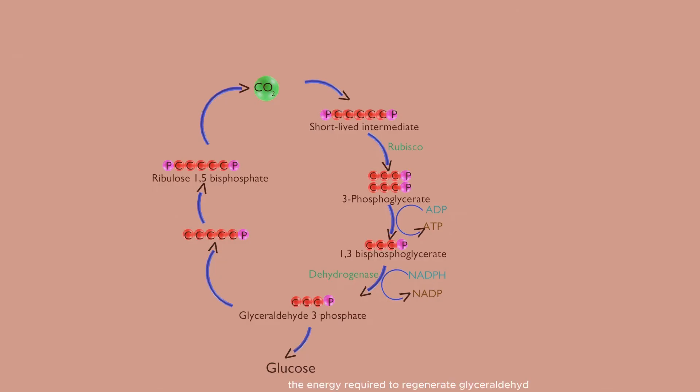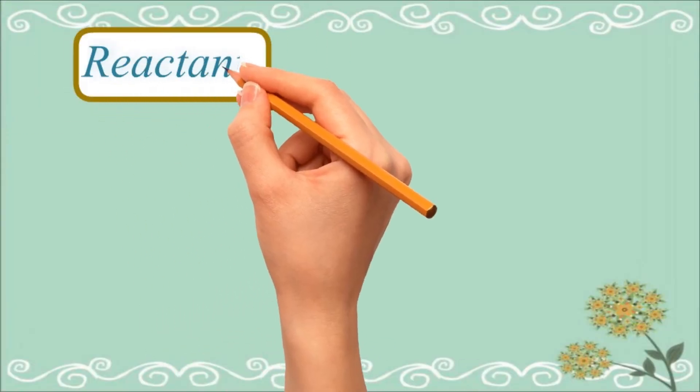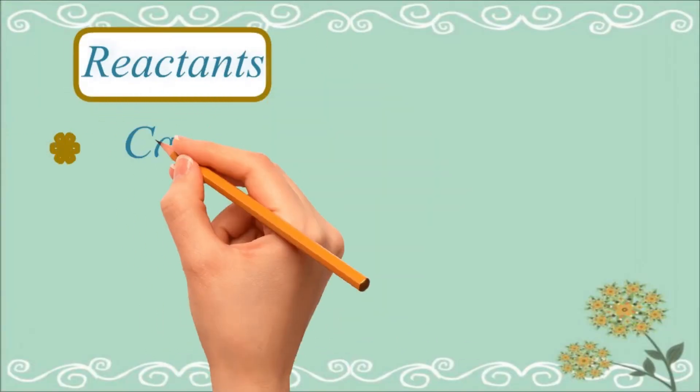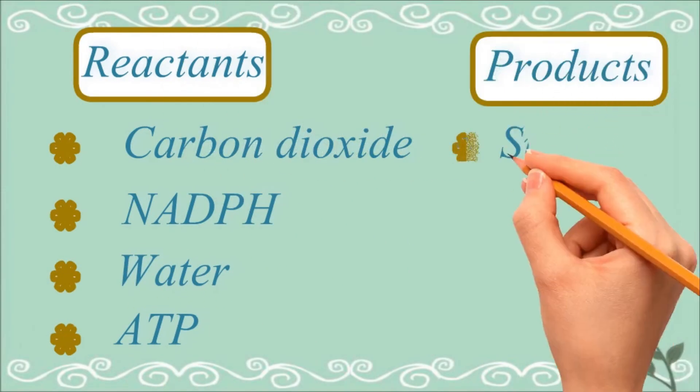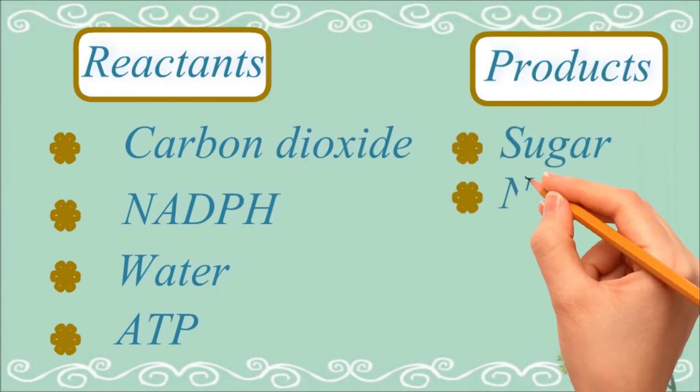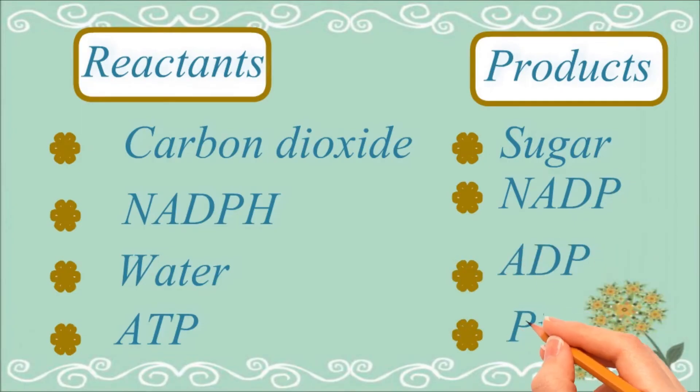by combining with a carbon acceptor that turns into ribulose 1,5-bisphosphate. The energy required to regenerate glyceraldehyde 3-phosphate is derived from ATP. Reactants taking part in the Calvin cycle are carbon dioxide, NADPH, water, and ATP. Its products are sugar molecules (glucose), NADP, ADP, and phosphate molecules.